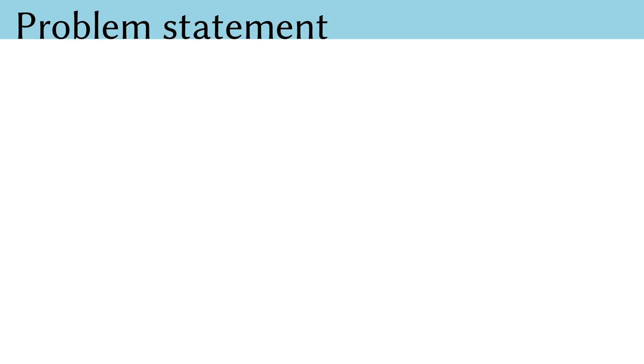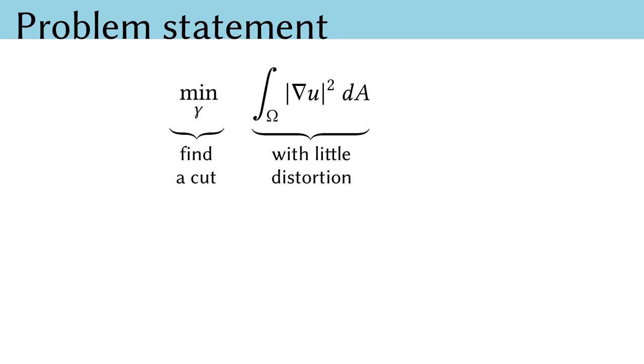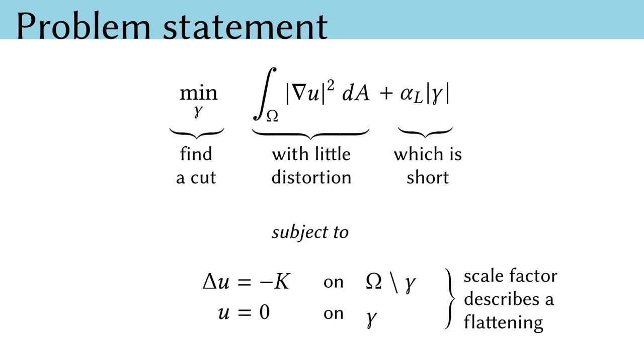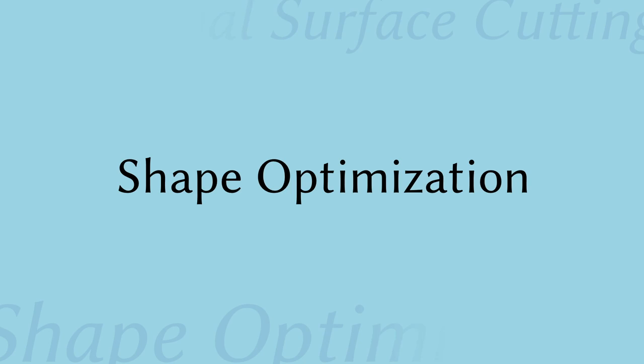Now we're equipped to write down the smooth problem that we intend to optimize. We want to find a cut gamma which has little distortion and which is also short, where I've introduced a weighting parameter alpha_L to denote the trade-off between length and distortion. This scale factor is subject to the Yamabe equation, which means that it describes a conformal flattening. This is really a different optimization problem than what we might be used to working with. Here, the unknown variable is not some vector of numbers, but the location of boundary conditions in a PDE. This isn't just something I can plug into my favorite optimization package. How do we optimize such a problem?